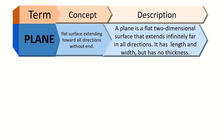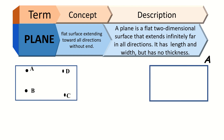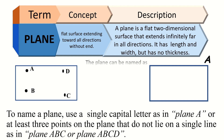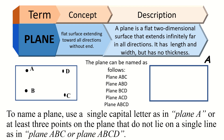A plane is a flat two-dimensional surface that extends infinitely far in all directions. It has length and width but has no thickness. There are two ways to label planes. Most frequently, we use three or four of the points that are in the plane as the name, indicated with a dot and labeled with a capital letter. The second way is with just one capital letter written in the corner of the image of the plane. The first plane in our illustration can be named as plane ABC, plane ABD, plane BCD, plane ACD, or plane ABCD. The second plane can be named as plane A.